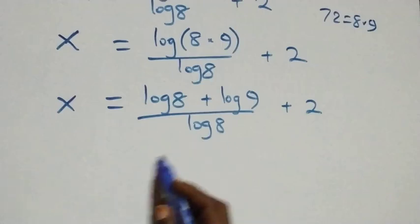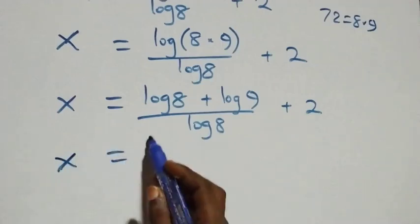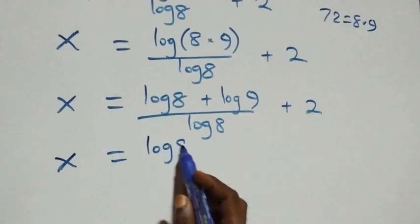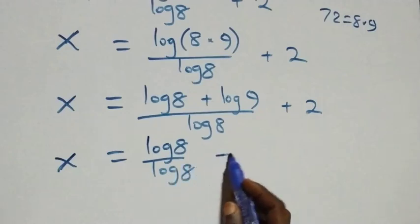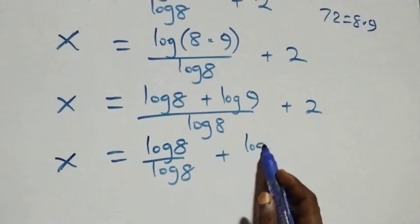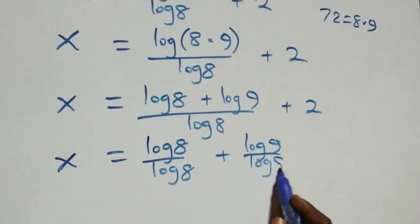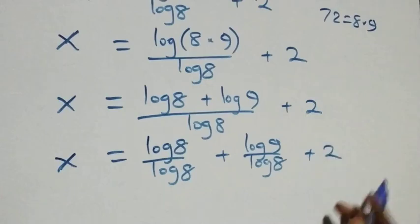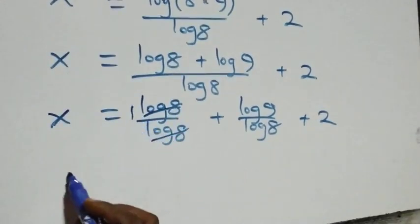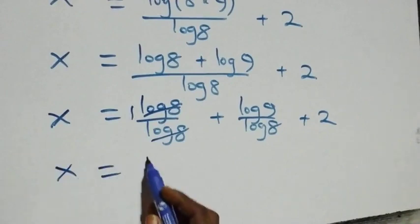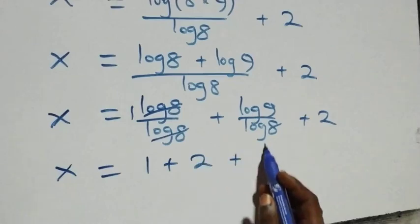We separate into two fractions: x equals log 8 over log 8 plus log 9 over log 8 plus 2. Since log 8 over log 8 equals 1, this becomes x equals 1 plus log 9 over log 8 plus 2, or x equals 3 plus log 9 over log 8.